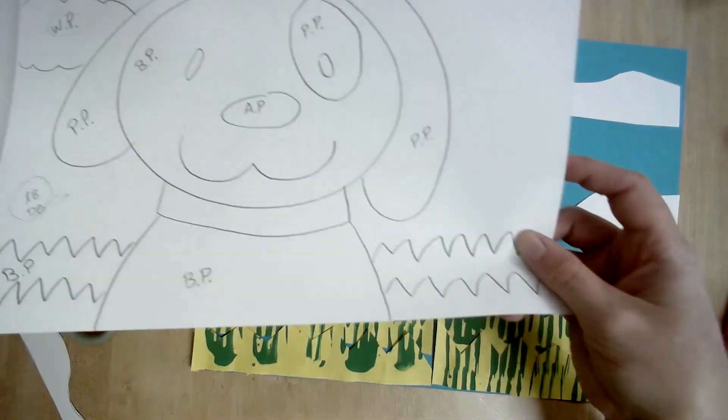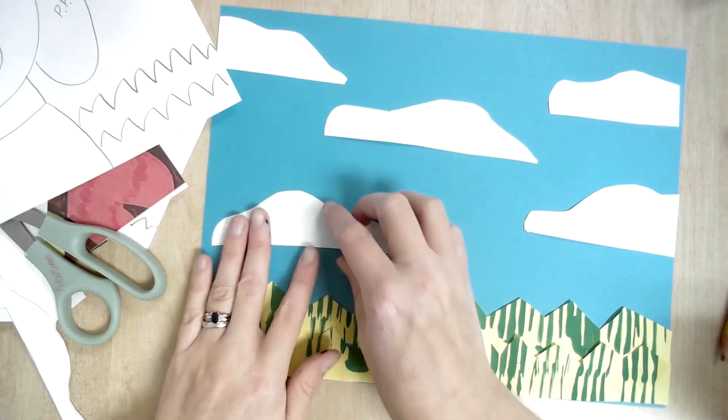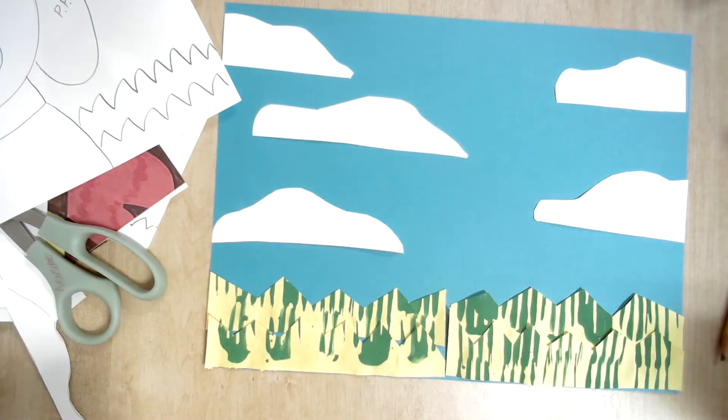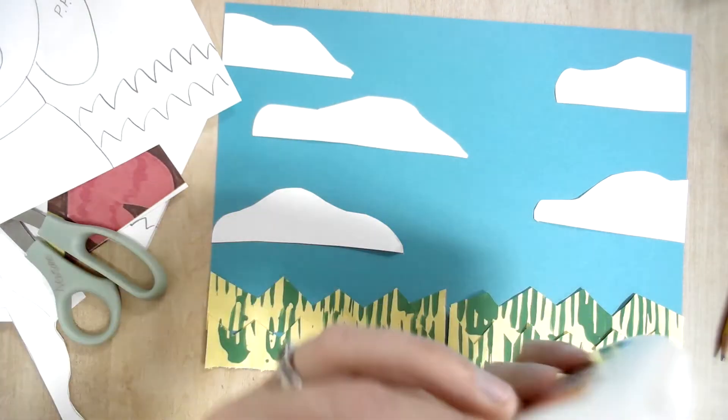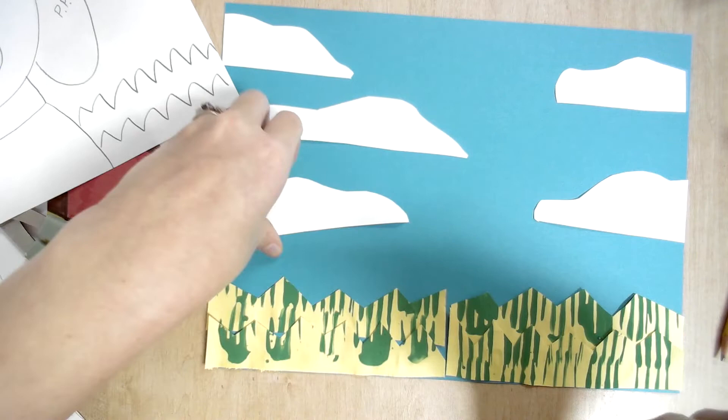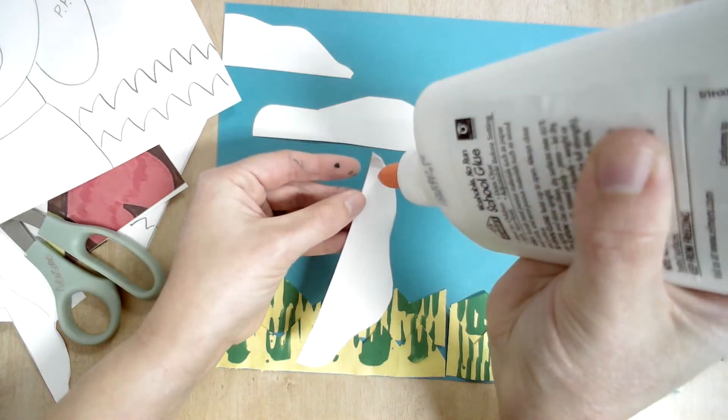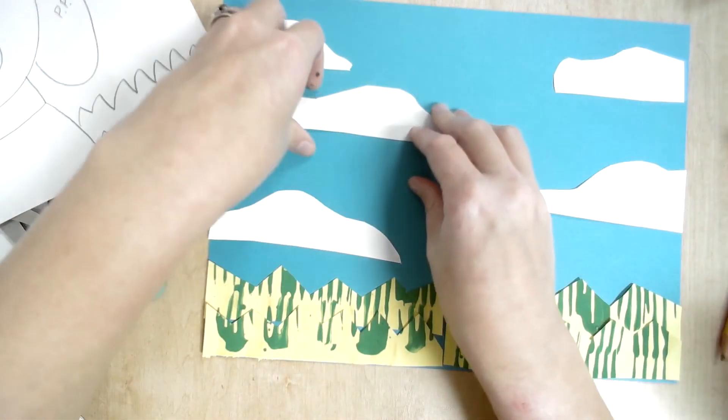I'm going to lay them out so that I'm happy with them. Remember, my dog's right in the middle, so I want most of the clouds off to the side so you can still see them. Once I have them all laid out, I'm going to take my glue and put just a little bit on each piece. Just a dot goes a long way. Hold it down for 10 seconds and glue the rest of them down.